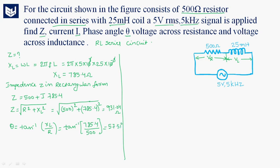We also have to find current. I is equal to source voltage Vs divided by Z. Vs is 5 volts and Z is 931.04 ohms, which gives current I equal to 5.3 milliamperes.